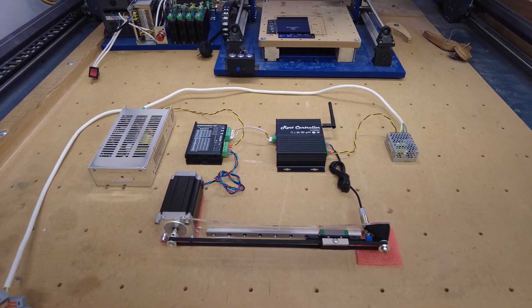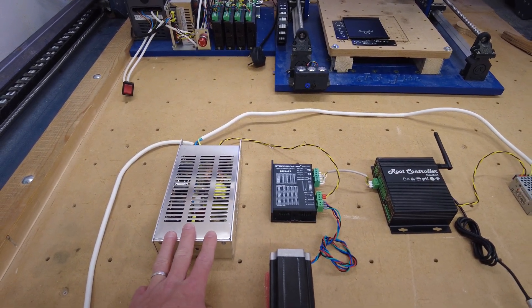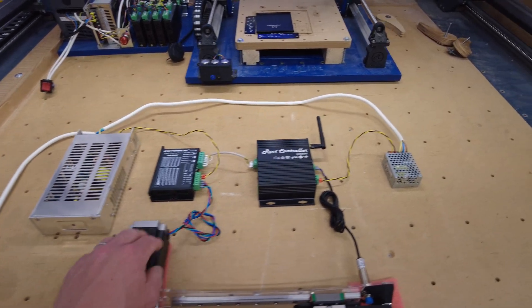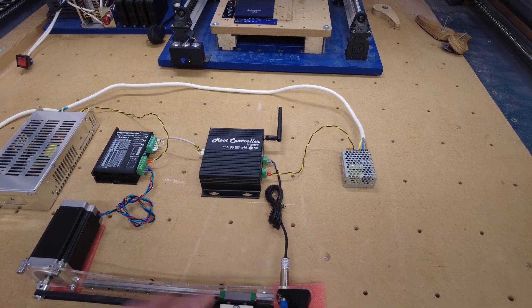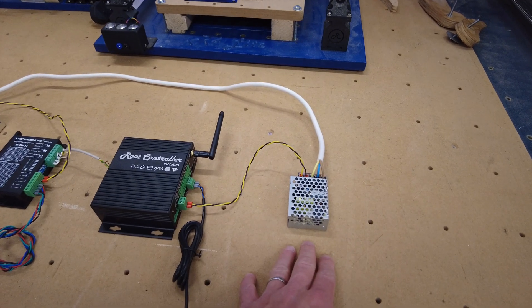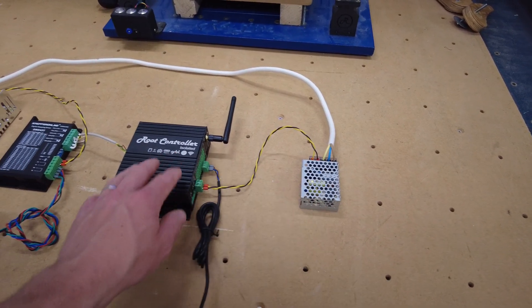What you see here is the complete system you need to get a CNC working. At the moment we've got the single axis on the left. We've got the power supply that's only used for the stepper motor driver and motor. Next we have the Root controller itself which does all the clever math and motion planning and generates all the pulses for the stepper motor driver. Over here we've got a second power supply that's just responsible for powering the Root controller and any inputs going into it.